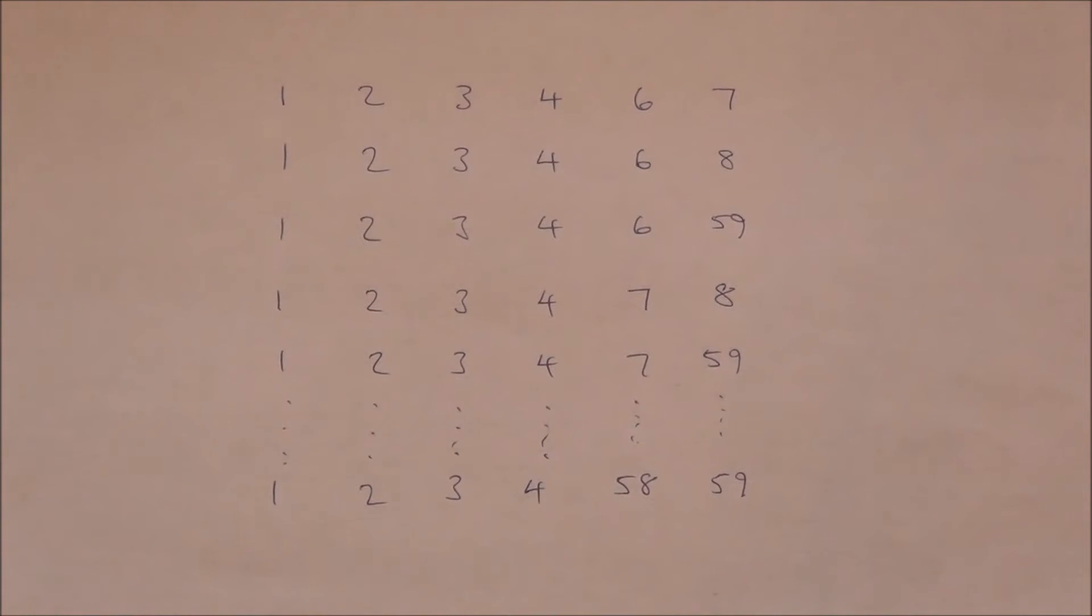To work out the total number of combinations which have a sequence of four consecutive numbers, in this case, 1, 2, 3, 4, we need to consider that more than one possible combination will have this sequence in it, because there are two extra numbers, and these can be anything from 6 upwards. We can't have 5, because that would give us a sequence of 5 consecutive numbers, and not 4 in this case.